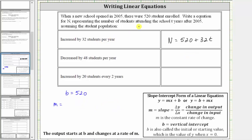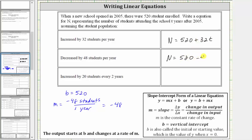In the second row, we're told the student population decreased by 48 students per year, which means m, the constant rate of change, is negative 48 students per one year. Notice how we have a negative here because the population decreased by 48 students per year. Simplifying and leaving the units off, m is negative 48, and therefore n, the student population, is equal to 520. And instead of plus negative 48t, it's more common just to write minus 48t.